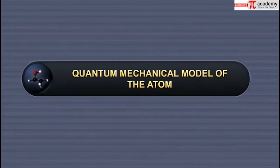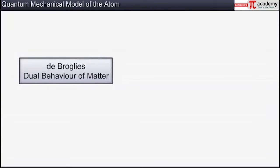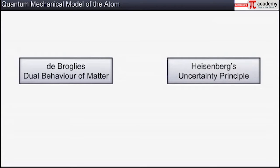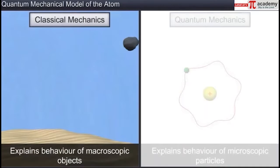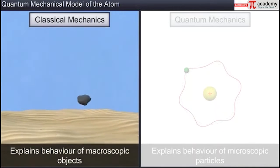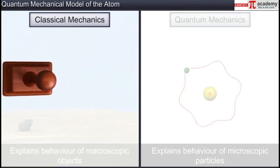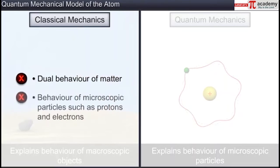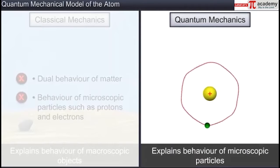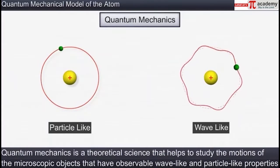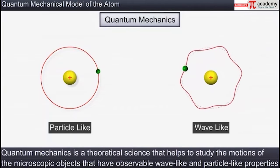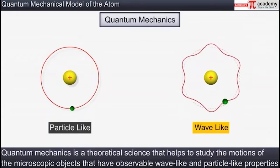In this module you will learn about the quantum mechanical model of the atom. De Broglie's dual behavior of matter and Heisenberg's uncertainty principle gave birth to a completely new branch of science called quantum mechanics. Classical mechanics successfully explains the behavior of macroscopic objects such as a falling stone on the basis of particle nature, but ignores the concept of the dual behavior of matter and thus fails to explain the behavior of microscopic particles such as protons and electrons. Quantum mechanics, based on the wave properties of matter, describes the behavior of microscopic particles in a much better way. Hence, quantum mechanics is a theoretical science that helps to study the motions of microscopic objects that have observable wave-like and particle-like properties.